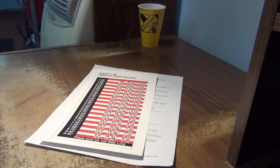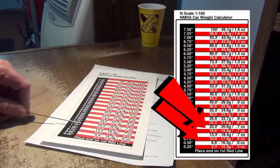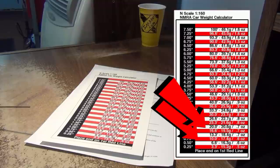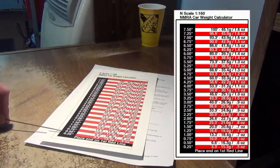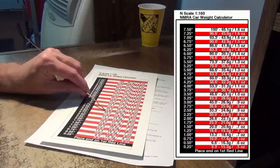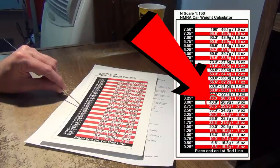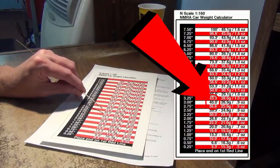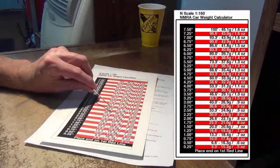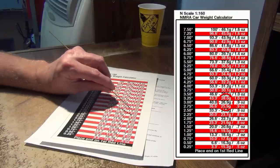This is my interpretation of RP-20.1 NMRA recommended practices for car weights — what I call my N-scale NMRA car weight calculator. The first thing you'll probably notice is the red and white stripes. Each red and white stripe is one quarter of an inch as listed on the side. From the length in inches, you'll notice the equivalent of that length in N-scale feet. For example, 3 inches equals 40 N-scale feet. Next to that number you'll find the minimum weight recommended for that car, in grams and in ounces.